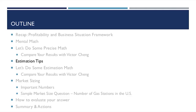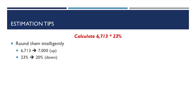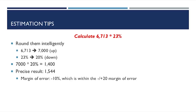Before we do estimation math exercises, here are some tips. For example, to calculate 6,713 multiplied by 23%, round intelligently. Round 6,713 up to 7,000, then round 23% down to 20% to neutralize the rounding effect. With these rounded numbers my result is 1,400, compared with the precise result of 1,544 — that's within a 10% margin of error, which is well within the acceptable 20% range.